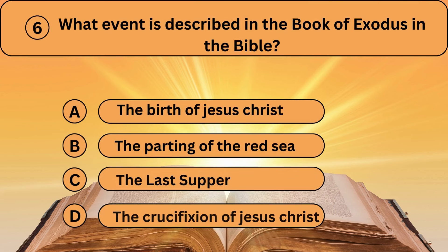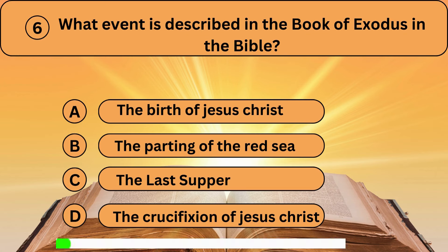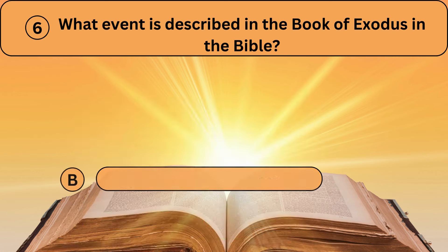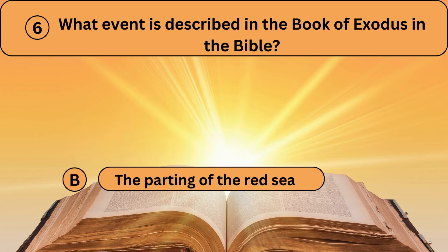Question six. What event is described in the book of Exodus in the Bible? A. The birth of Jesus Christ. B. The parting of the Red Sea. C. The Last Supper. D. The crucifixion of Jesus Christ. The parting of the Red Sea is the correct answer.